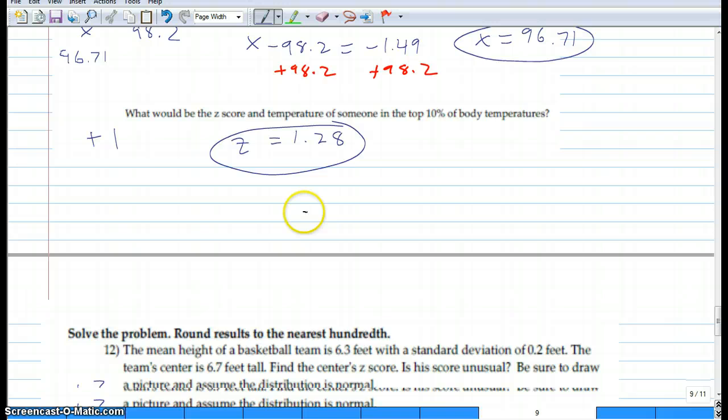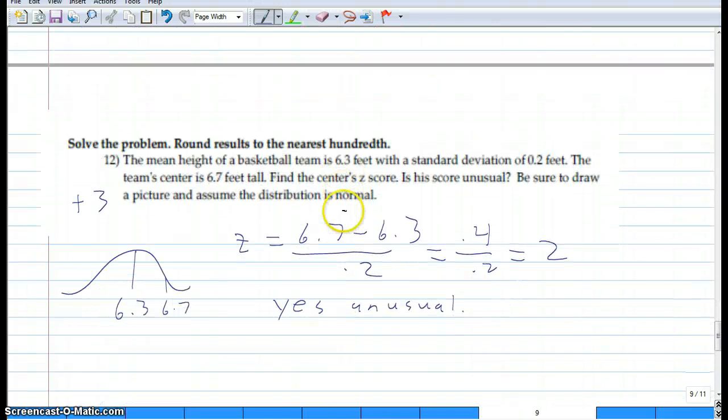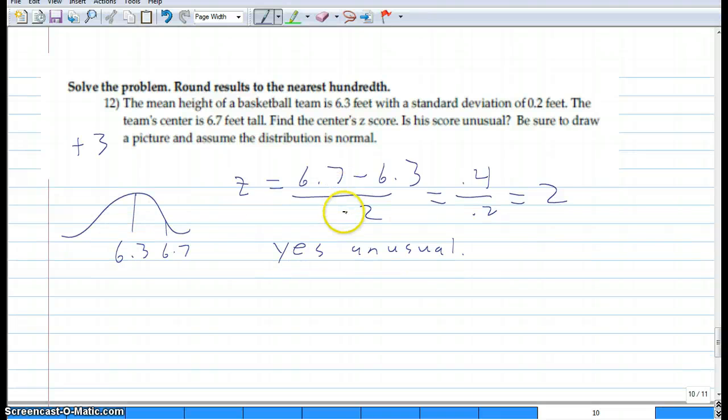Number twelve: another Z table. You draw your picture. The average is 6.3. Essentially, what's the Z score for somebody that's 6.7? You calculate there are two standard deviations and we'll say yes, that's unusual. That's less than 5% chance of them being that tall, so that is an unusual height.